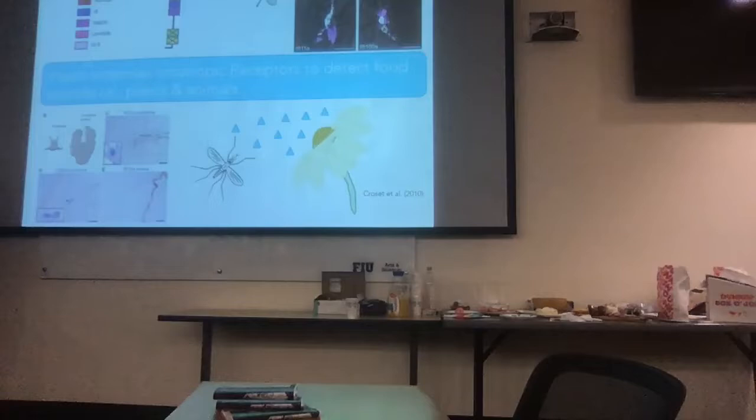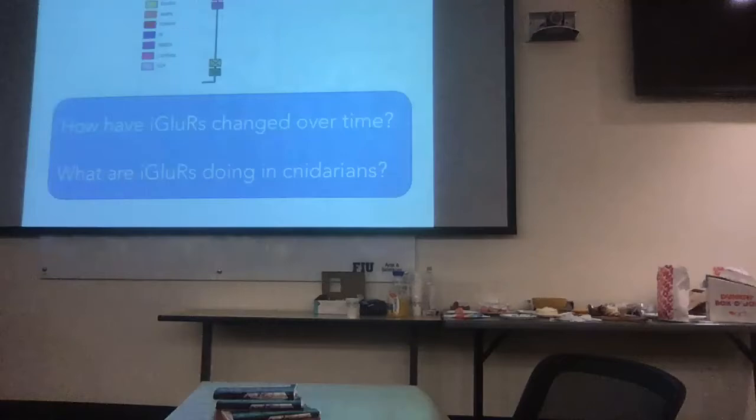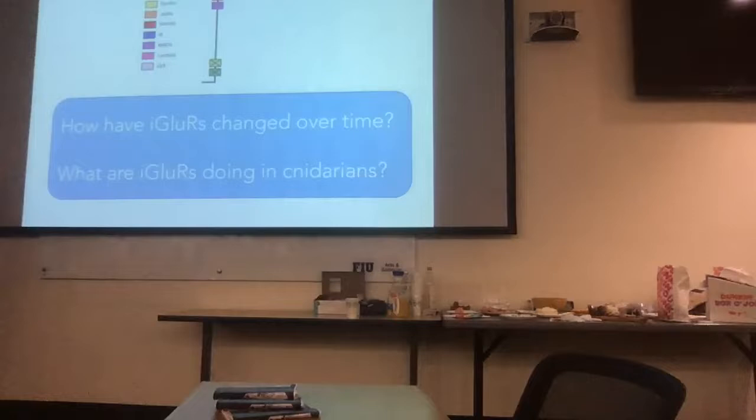In humans or vertebrates, we know that these iGluRs are important for signaling and sending synapses. Here we have a synapse where ligands are coming from externally and the receiving end is where the different iGluRs are located. But what if we have an animal without a brain, like a cnidarian—a coral or an anemone, even a jellyfish? My two big questions are: how have iGluRs changed over time, and what are iGluRs doing in cnidarians?